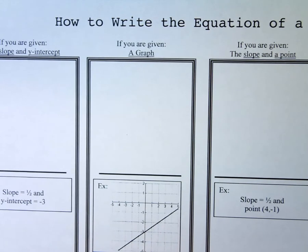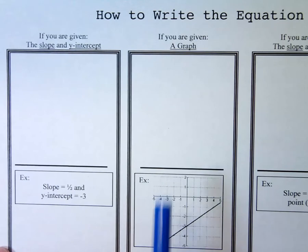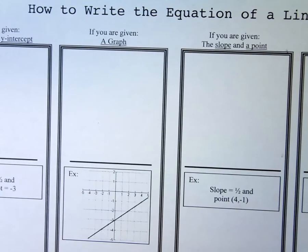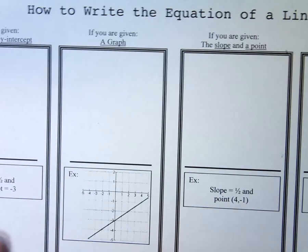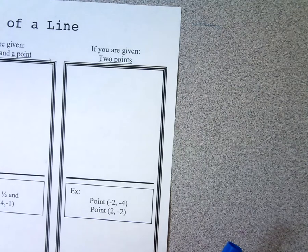We are going to summarize how to write the equation of a line. We have talked about all these different things: if you're given the slope and the y-intercept, if you're given a graph, if you're given the slope and a point, or if you are given two points.